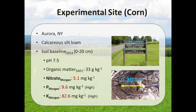We conducted a study at Musgrave Research Farm in Aurora, New York. The soil texture is calcareous silt loam. The soil baseline in 2014 at the top 20 centimeters, or 8 inches: pH was 7.5, organic matter was 33 grams per kilogram (3.3%). Extractable nitrate, phosphorus, and potassium were 5.1, 9.6, and 82.6. For U.S. audience, 9.6 is equivalent to 19.2 pounds per acre, and 82.6 is equivalent to 165.2 pounds per acre. Based on phosphorus and potassium guidelines in New York, these values are considered high soil levels.